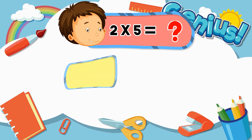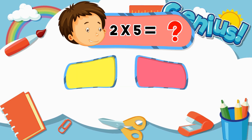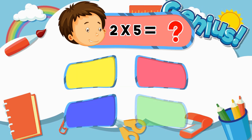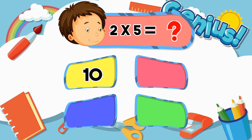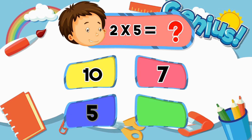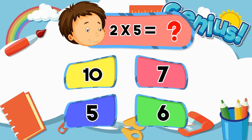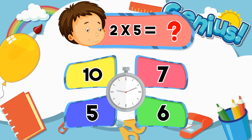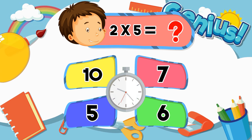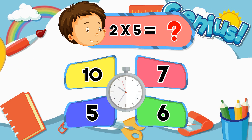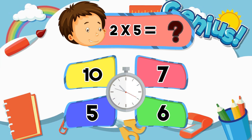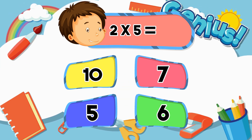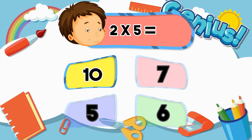What is 2 times 5? 10, 7, 5, 6. The answer is 10.